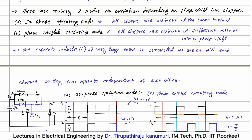The first mode is the in-phase operating mode — the name itself indicates that all choppers operate in the same phase, meaning all parallelly connected choppers turn on and off at the same instant. The second type is the phase-shifted operating mode, where each chopper is triggered at a different instance of time, meaning there is a phase shift between how they operate. The chopper frequency — at which each chopper operates — remains the same; only the firing instant is different in phase-shifted operating mode.